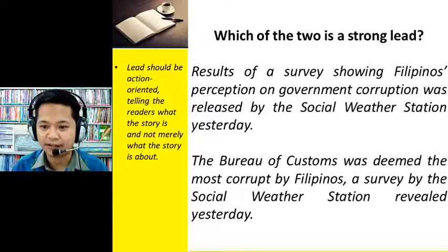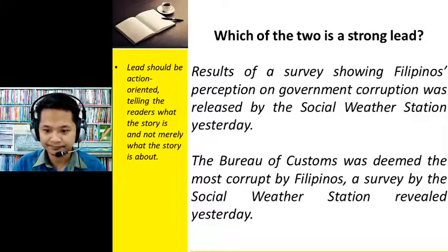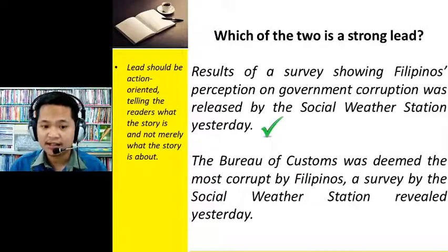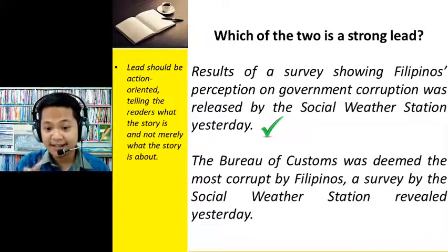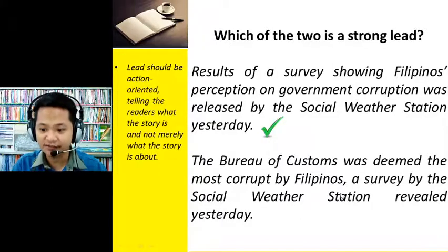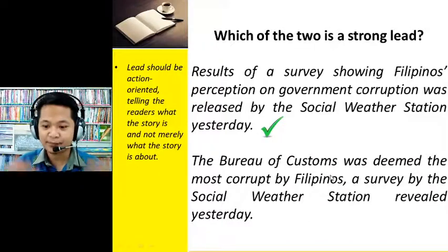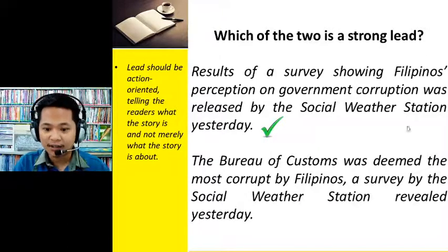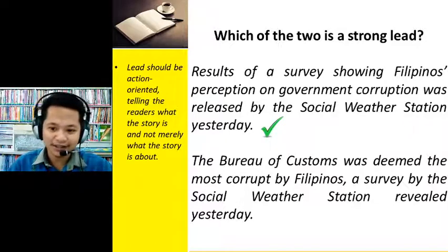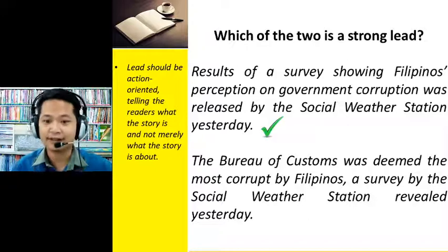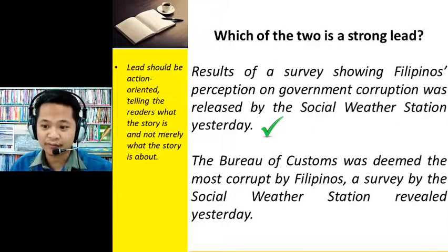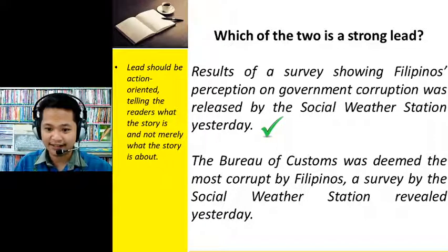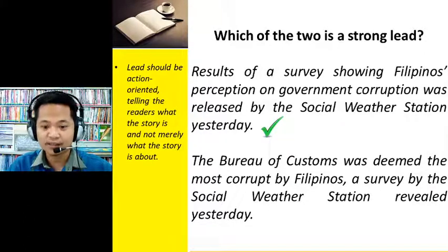For the next example, the strong lead is the first one because leads should be action-based. The second lead just states that a survey was conducted — it's purely informational with no result mentioned. The first lead, however, shows what resulted from the survey — results of a survey showing Filipinos' perception on government corruption were released by the Social Weather Station. It's action-based, making it the stronger lead.